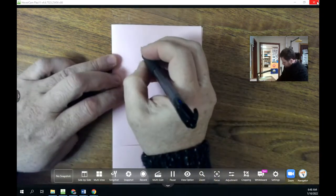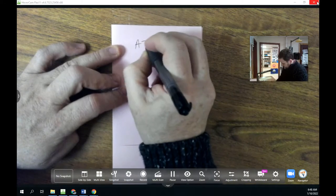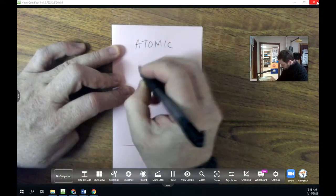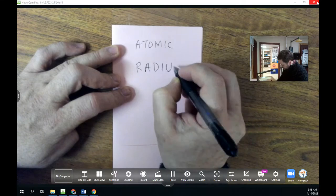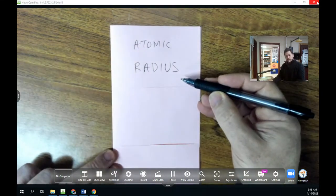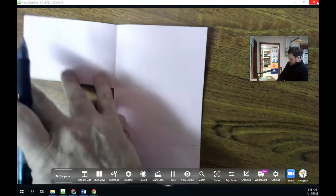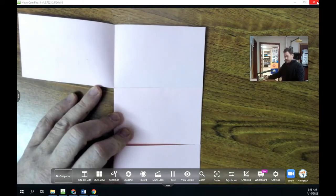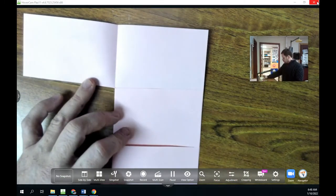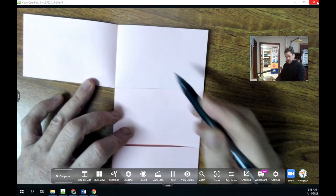The first of those four periodic trends we're going to learn about is atomic radius. And for each of these trends, we're going to just write the name of the property that we're discussing on the front, and then we open up the page, we're going to write its definition and show what the pattern is across the periodic table.